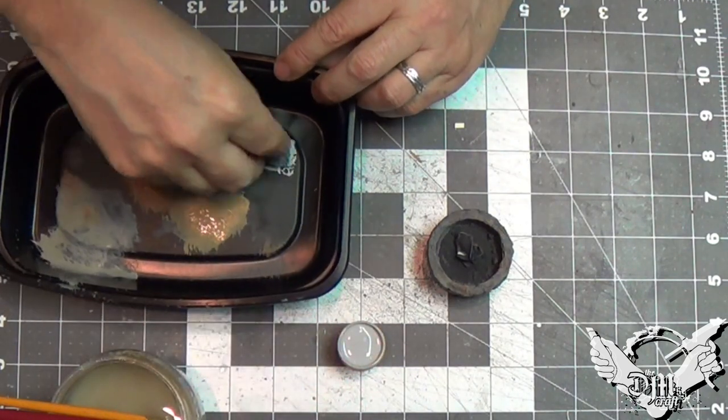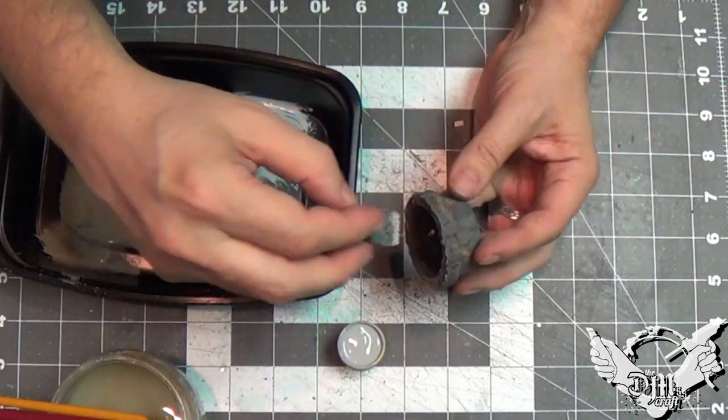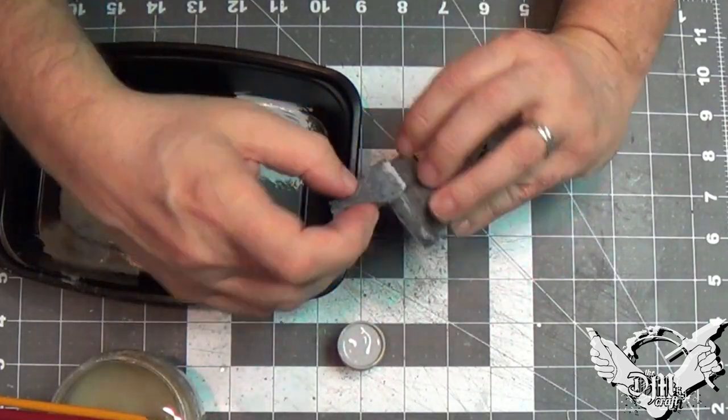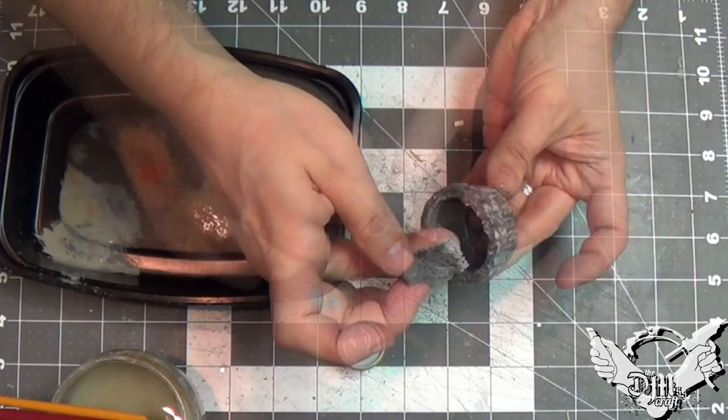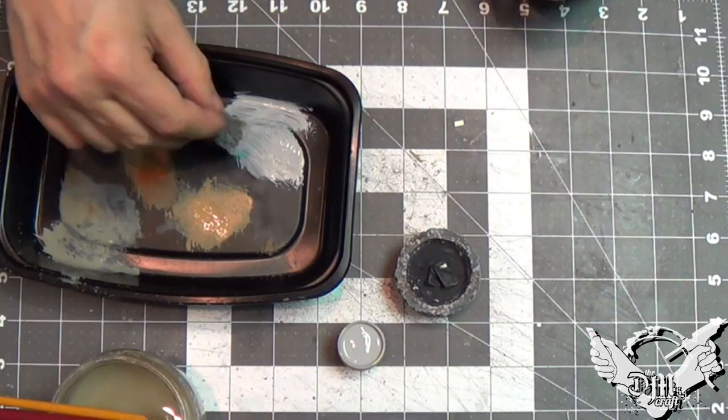Now, I'm going to add some highlight. This is just a light gray and a sponge. I'm going to kind of stipple around it. Pull up the highlights. Easy to do. Just making sure I get in the inside there.